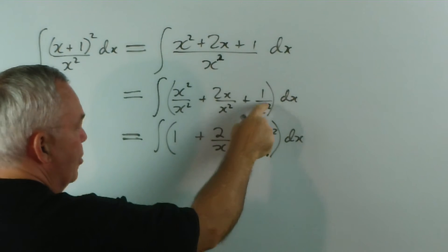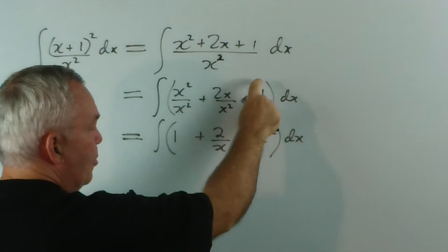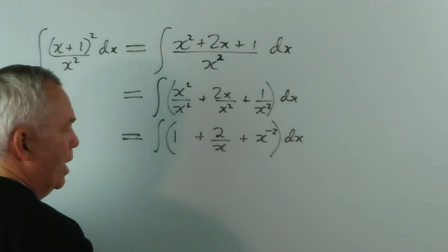The derivative of x squared is 2x, which we don't have there, so we treat this as a power of x.